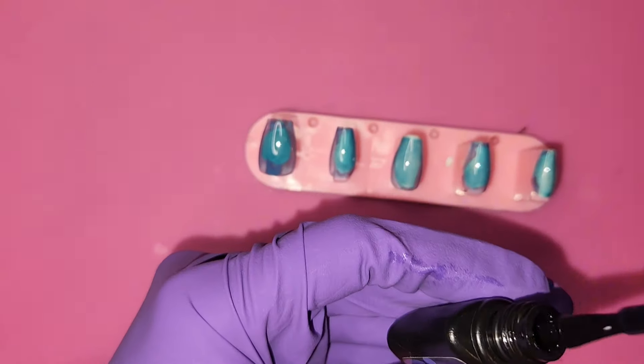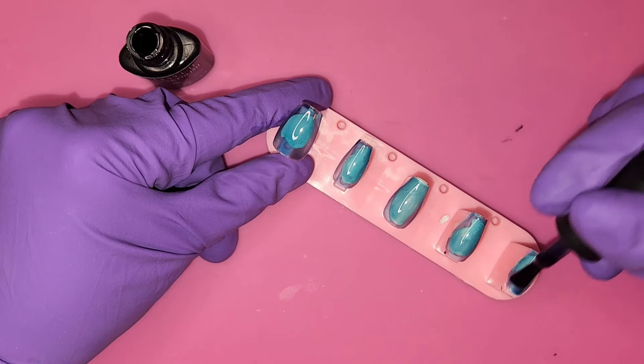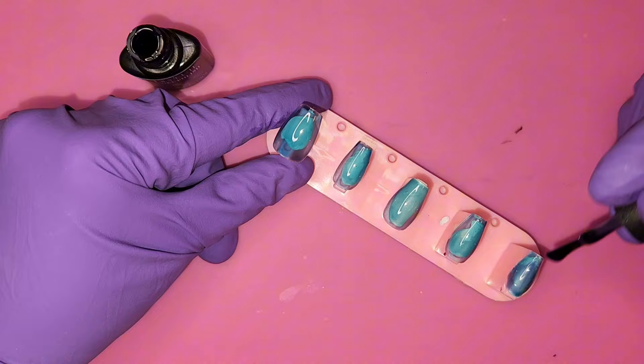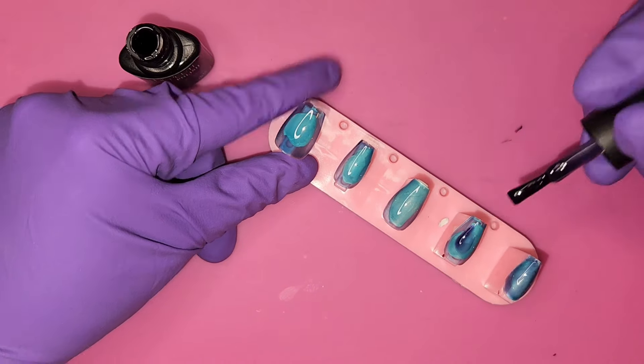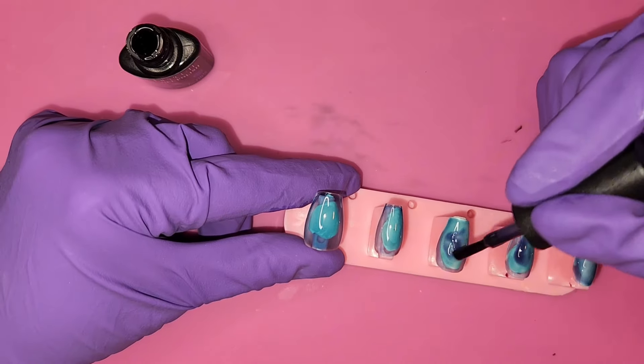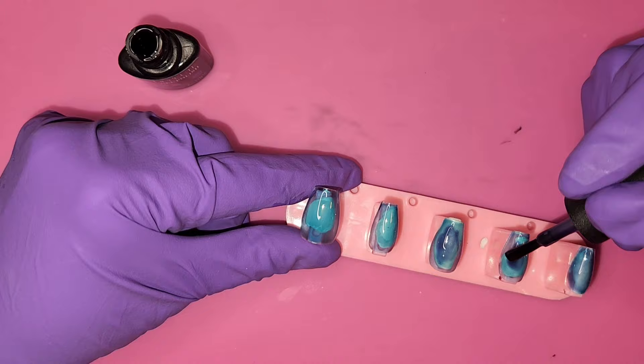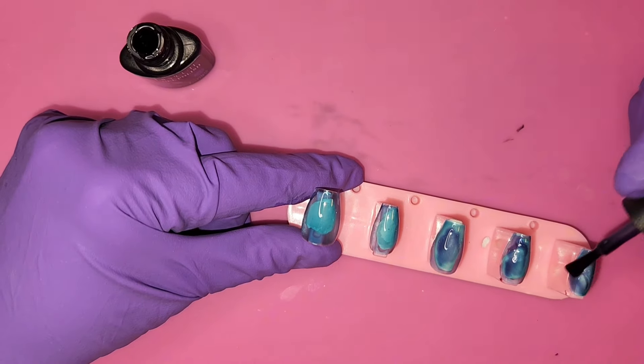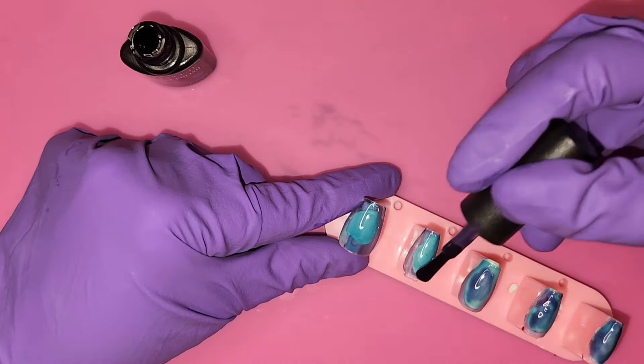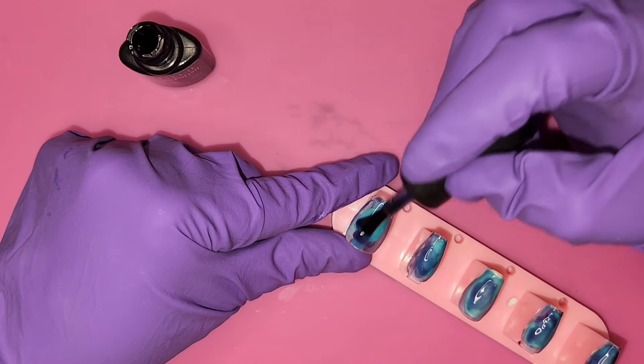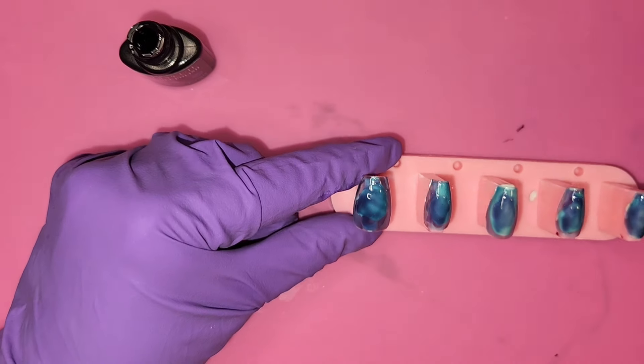Now I'm taking a darker jelly blue and I'm just messily placing it in the middle and kind of dragging it out as I see fit, trying to make them kind of different but kind of the same at the same time. After I do this, I cure them.